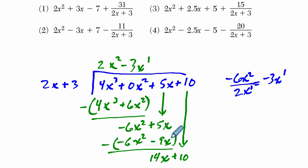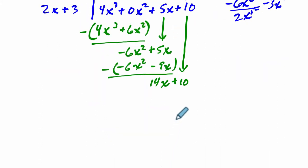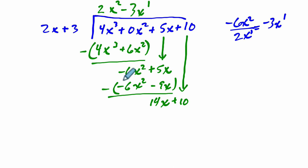Okay, we're almost done. At this point, let me just give myself some more room. We ask, how many times does 2x go into 14x? And again, we can divide on the side if we want to see how that works. 14x divided by 2x, that's just 7. The x's cancel out and 14 divided by 2 is 7. So I put a plus 7 here.